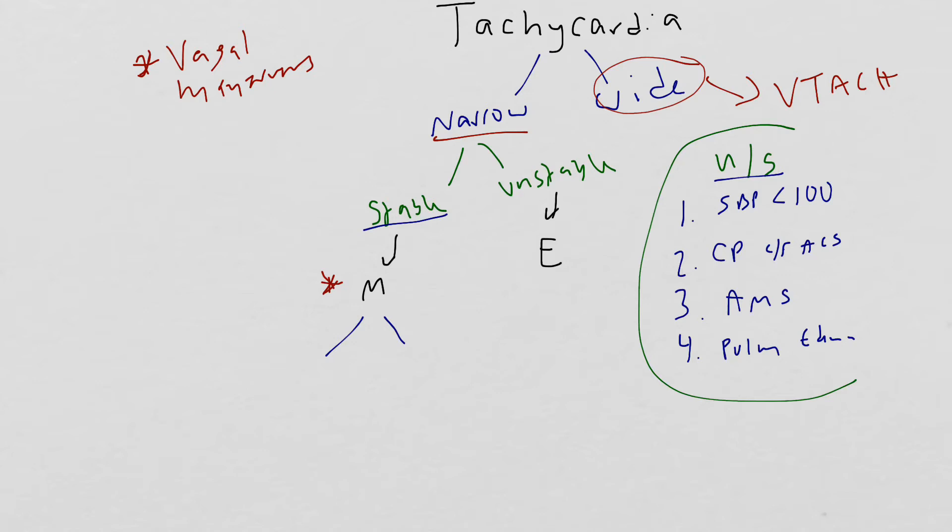That next branch point is we want to know if the tachycardia is regular or if it's irregular. There are a number of regular and irregular narrow complex tachycardias, but I want you to remember at least three from each category.